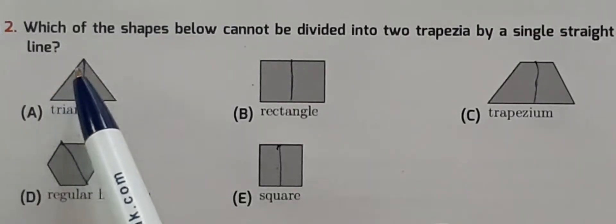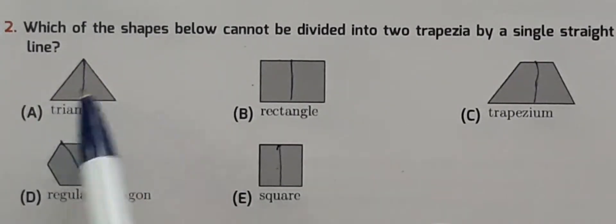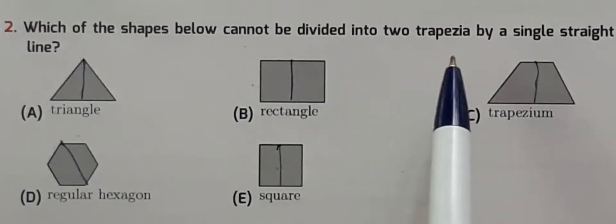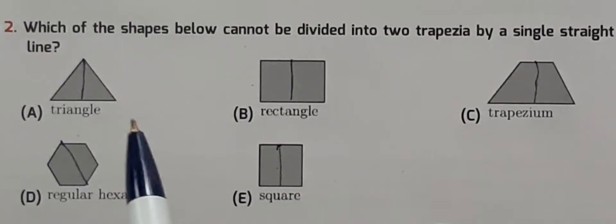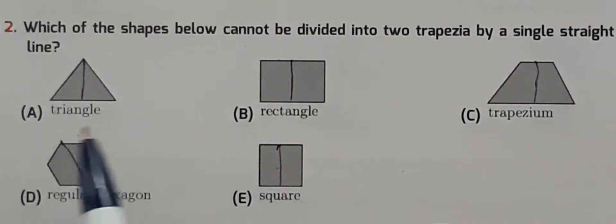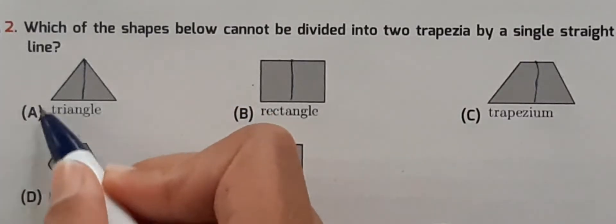So, which shape cannot be divided into two trapeziums? The triangle cannot be divided into two trapeziums by a single straight line. The answer is option A: triangle.